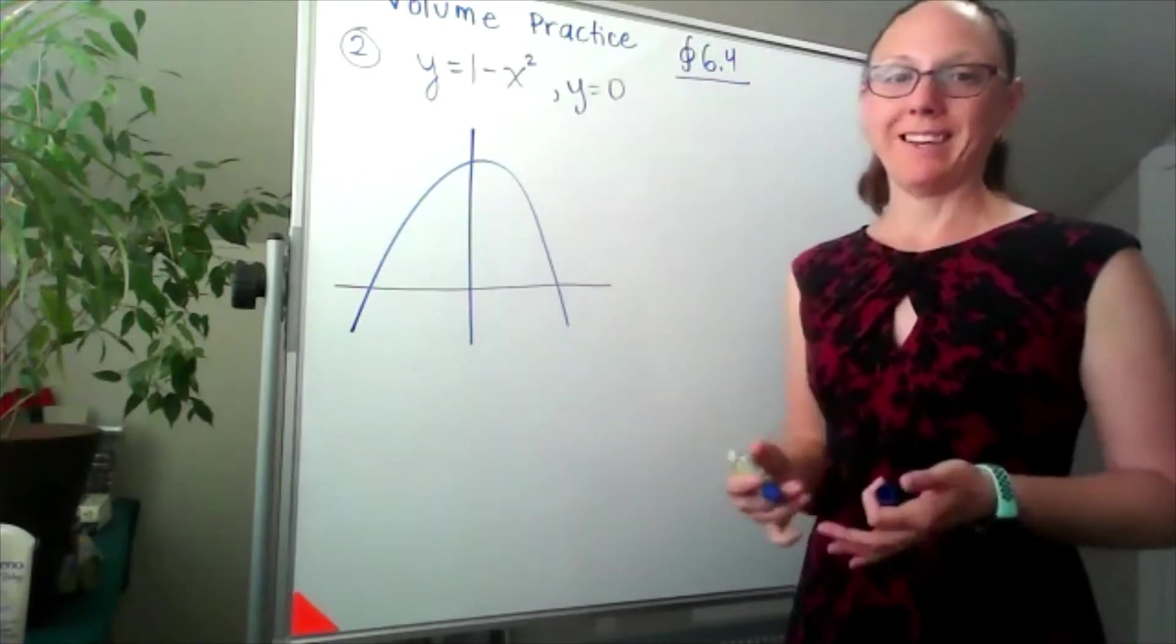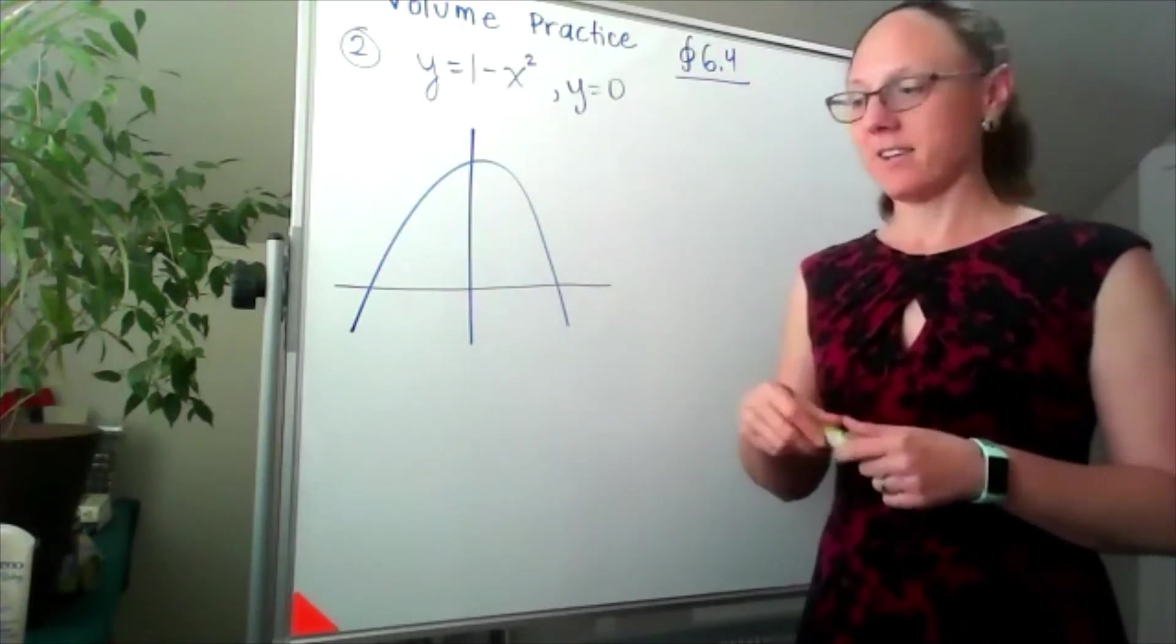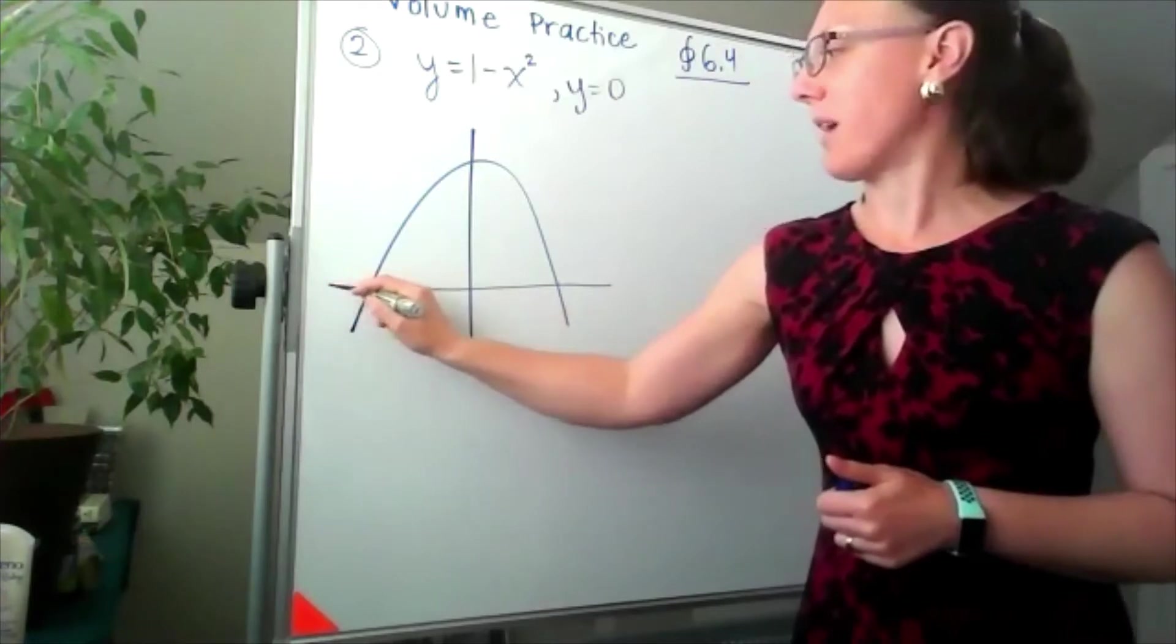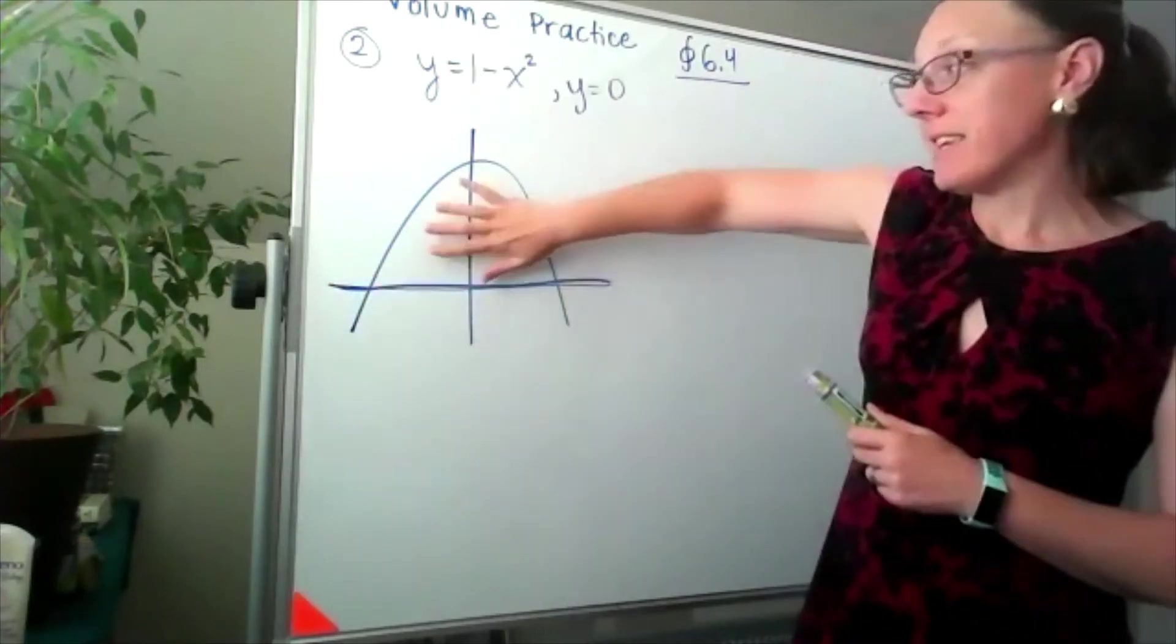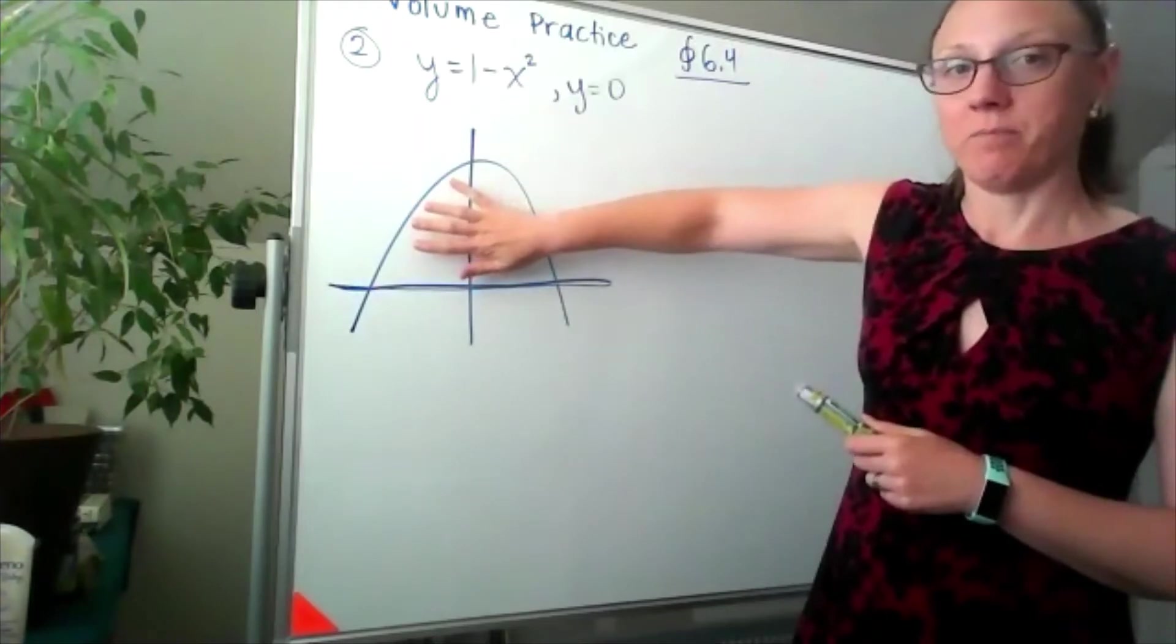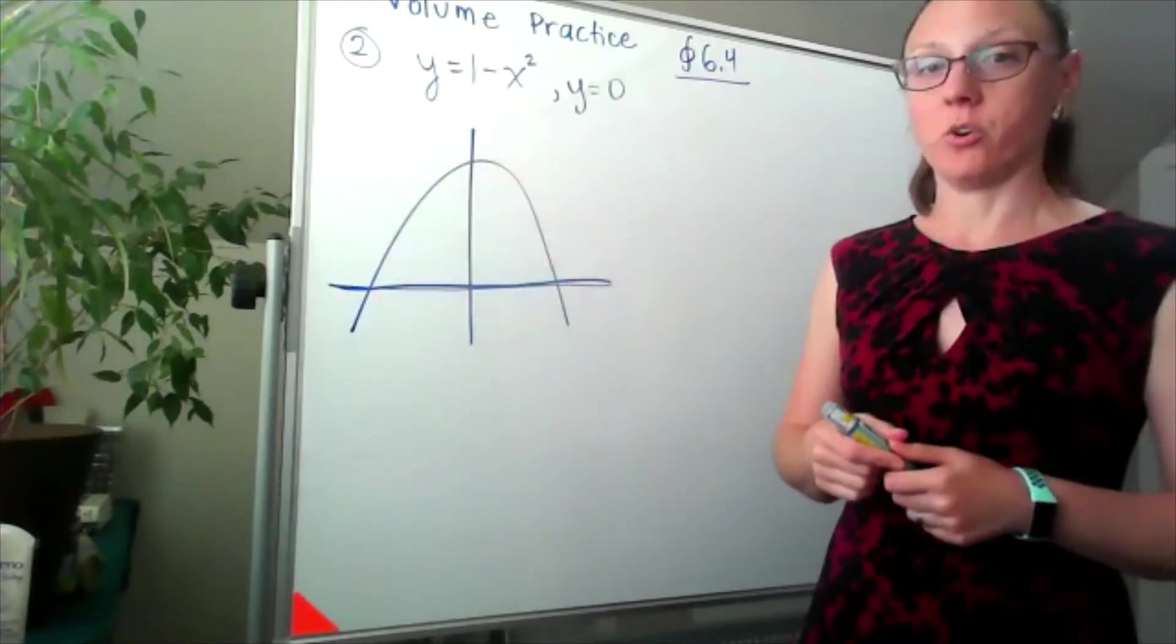Y equals 0 is the x-axis in disguise. So here's my y equals 0 line, which means this is the region in question, the part that's bounded by the two curves.